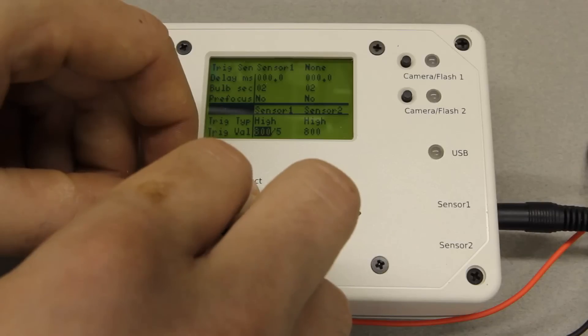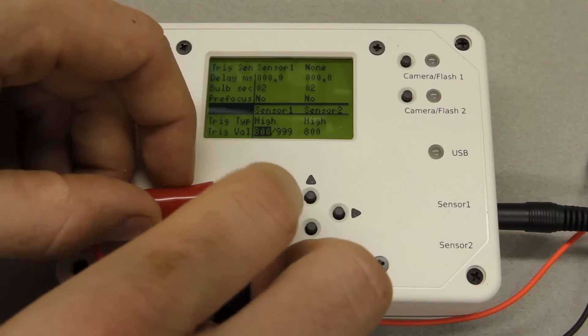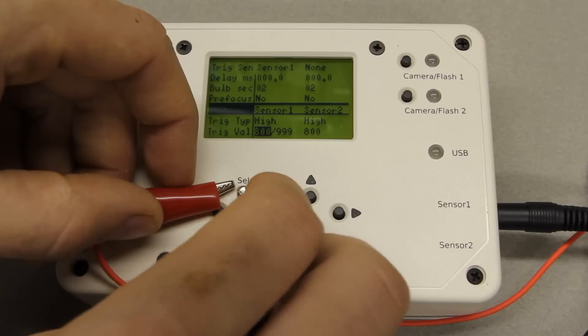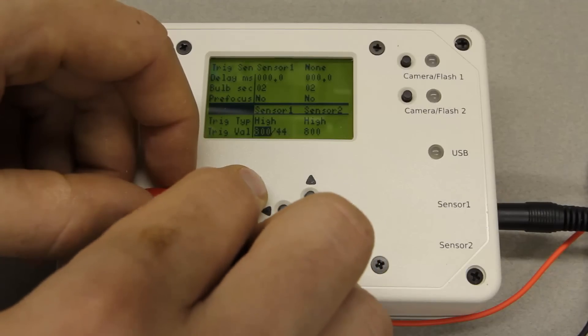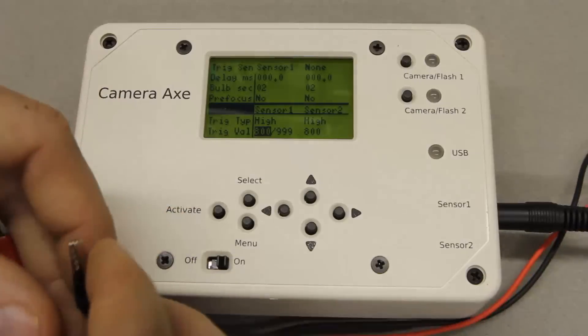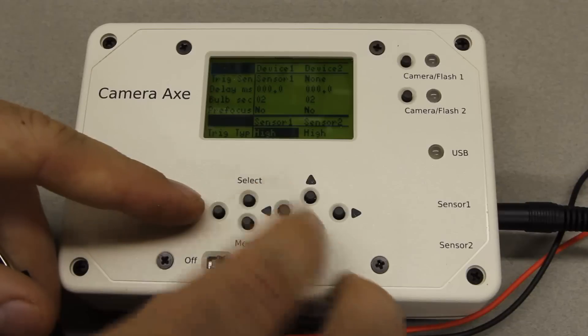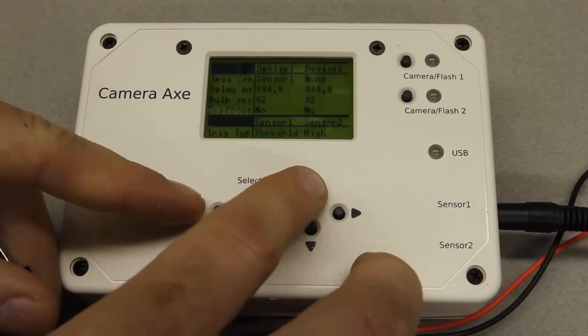What that means is if I'm going to be causing a short circuit like this, I want to trigger on low. Right now its trigger type is high, so I'm going to change that to low.